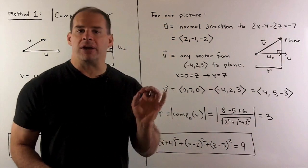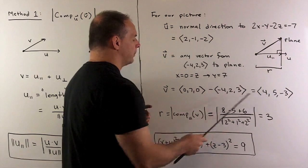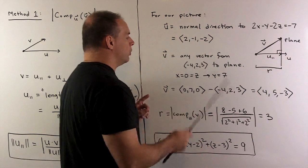Now we just put our vectors into our formula. So we take the dot product of these two vectors. We get 8 - 5 + 6, which is 9. The length of u is 3.